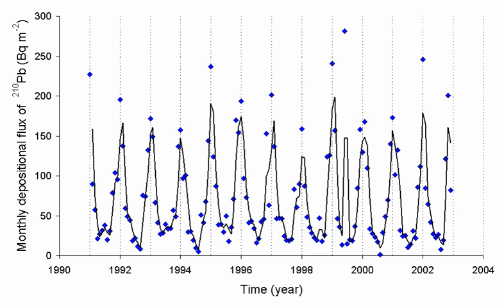Since radon is a colorless, odorless gas, the only way to know how much is present in the air or water is to perform tests. In the United States, radon test kits are available to the public at retail stores, such as hardware stores, for home use, and testing is available through licensed professionals who are often home inspectors. Efforts to reduce indoor radon levels are called radon mitigation. In the U.S., the Environmental Protection Agency recommends all houses be tested for radon.